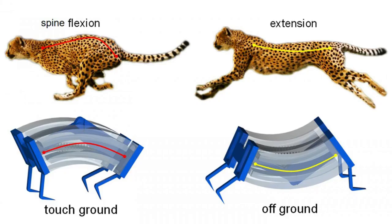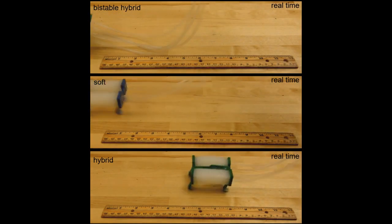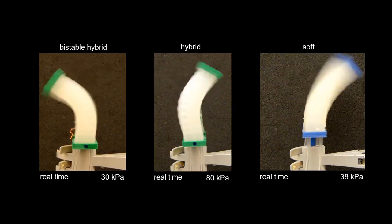They can switch between these stable states rapidly by pumping air into channels that line the soft silicone robot. Switching between the two states releases a significant amount of energy, allowing the robot to quickly exert force against the ground.